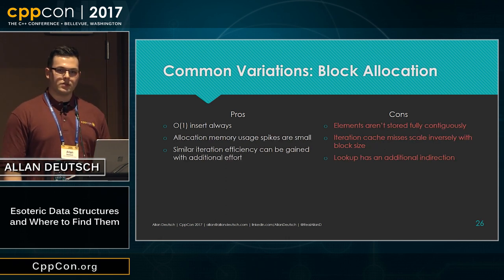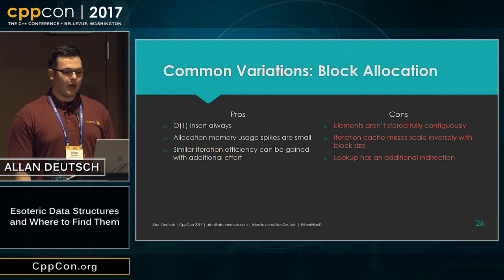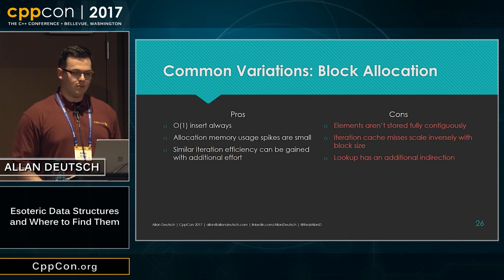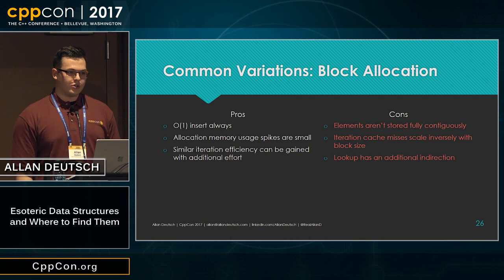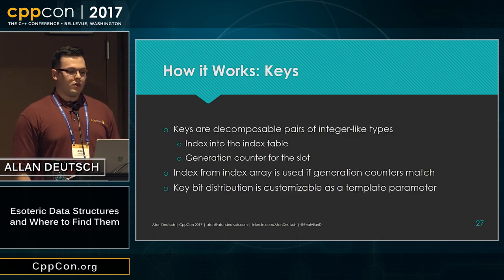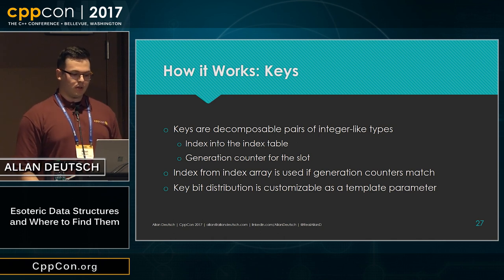Another variation is using block allocations, similar to a deque. That one also has O(1) insertion and the allocation memory usage spikes are a bit smaller than using a vector-like backing. The iteration performance can be tuned to get pretty close to just having a fixed single block of memory. But the elements aren't stored fully contiguously because of the gaps in memory, and cache misses scale inversely with the block size — so the smaller your jumps in memory usage, the worse the cache performance. The lookup has an additional indirection since it also has to find the correct block. The keys are a decomposable pair of integers: the first is the index and the second is the generation, and keys can be tuned by the user as a specified template parameter.